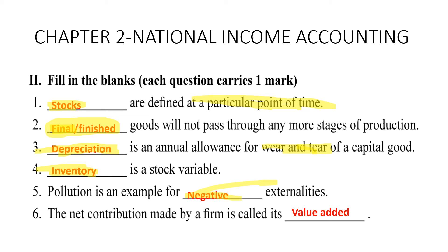Fifth: pollution is an example of negative externalities — all of this has been discussed in detail in the externalities video. Sixth: the net contribution made by a firm is called value added.